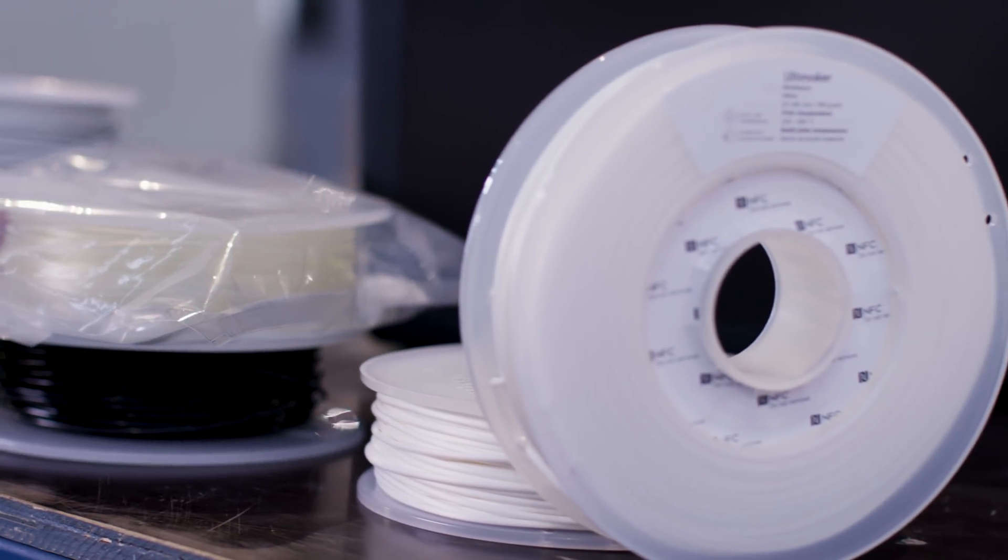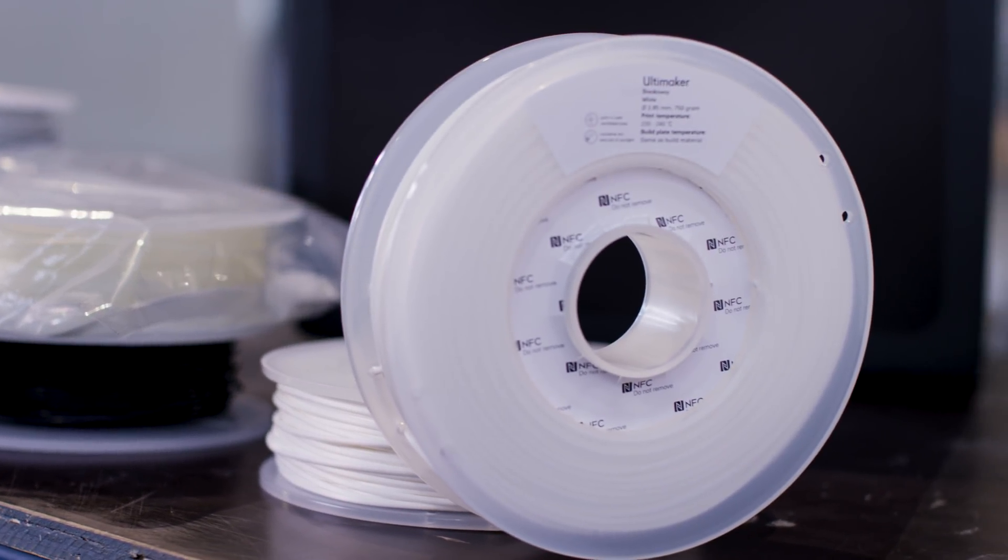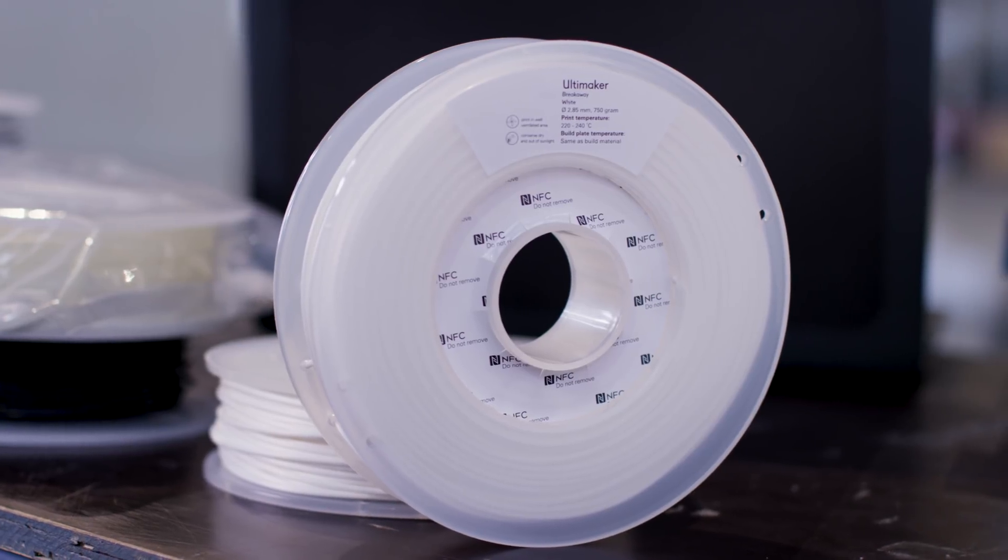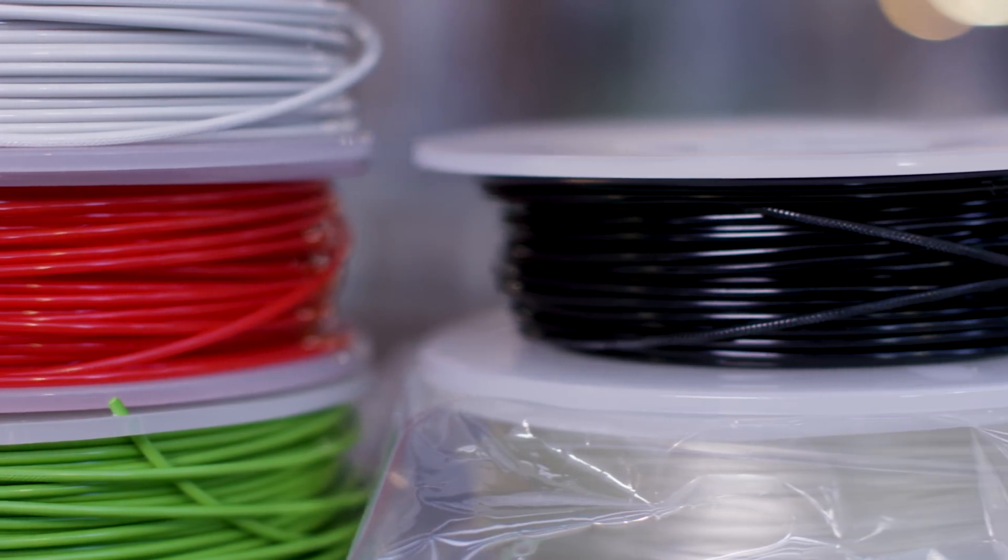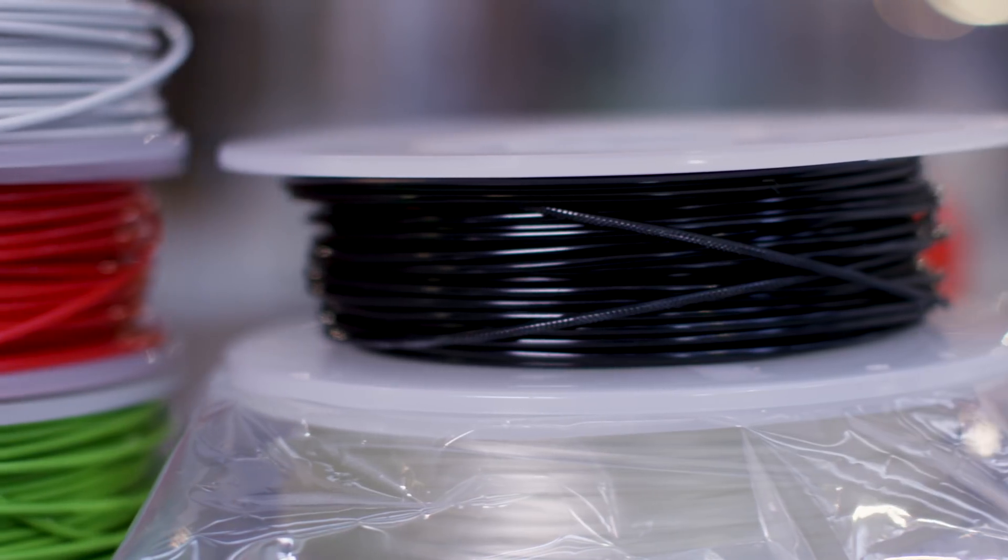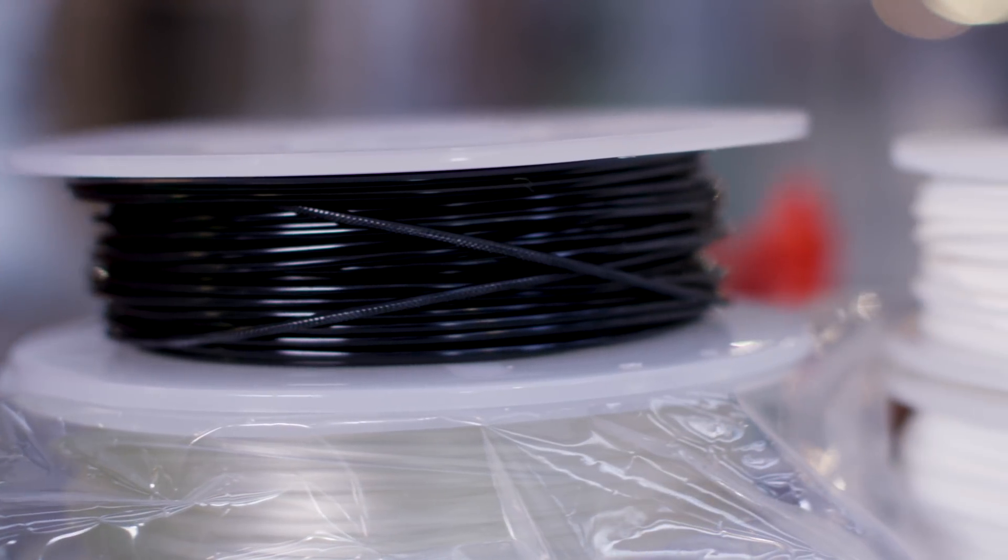Using dual extrusion on the Ultimaker 3 or Ultimaker 3 Extended, Breakaway can be combined with a wide range of materials, including ABS, Nylon, PLA, CPE, and CPE+.